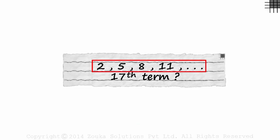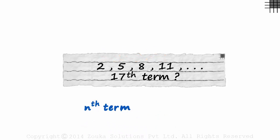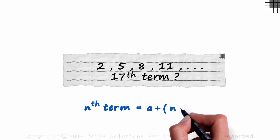Look at the terms in the sequence. It is an arithmetic one, as the difference between two consecutive terms is constant. And we know that the nth term of an arithmetic sequence is given by the formula A plus N minus 1 times D.